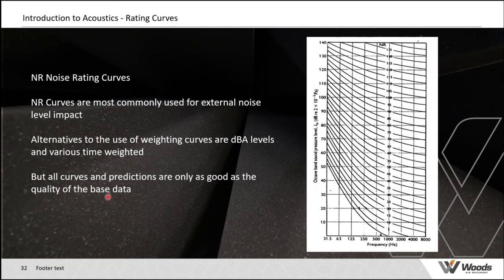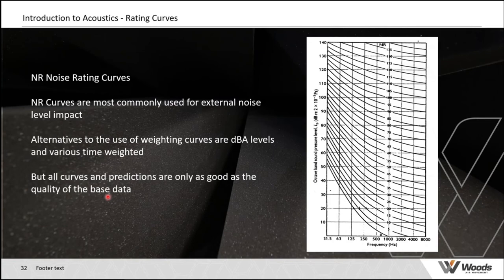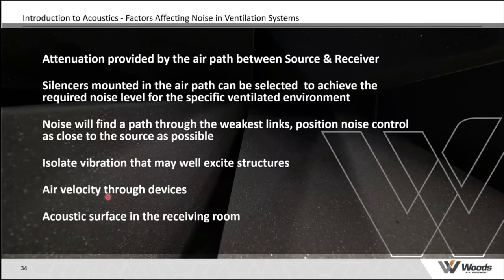There's also the NR (Noise Rating) system, which is an ISO standard and the European equivalent of NC. It's similar but more extensive, with a range going up to 135 or higher. The NR rating is the value achieved at 1000 Hz, so NR 40 is 40 dB at 1000 Hz. You still follow the same process of plotting measured or predicted values against the criteria curves.